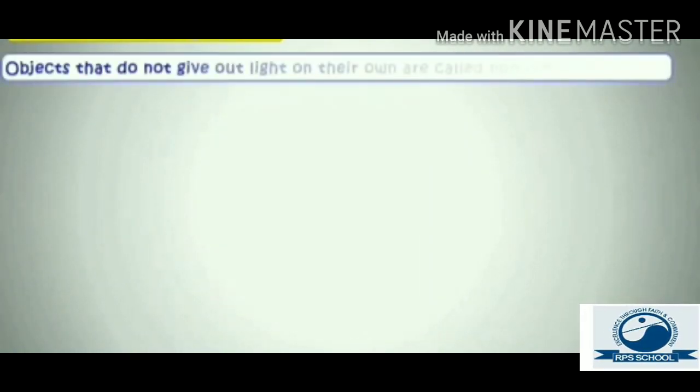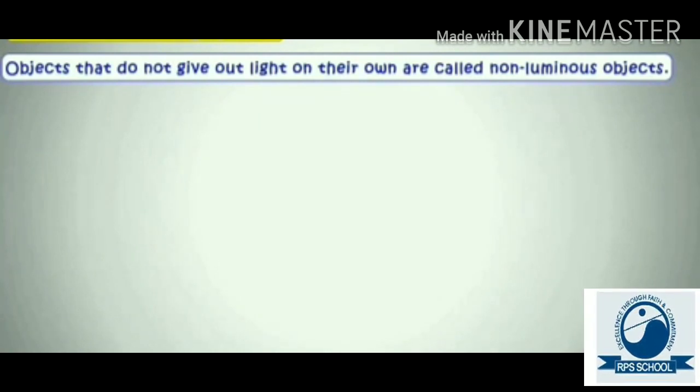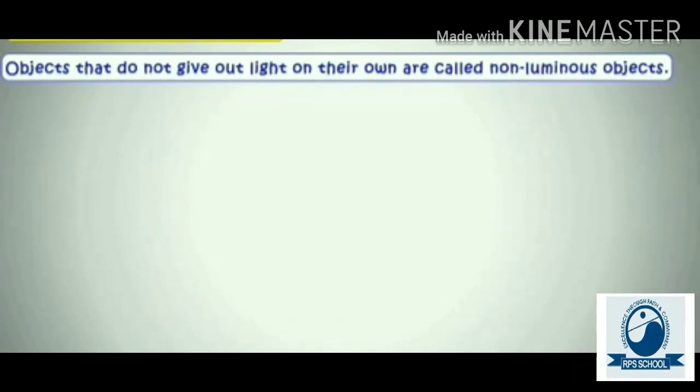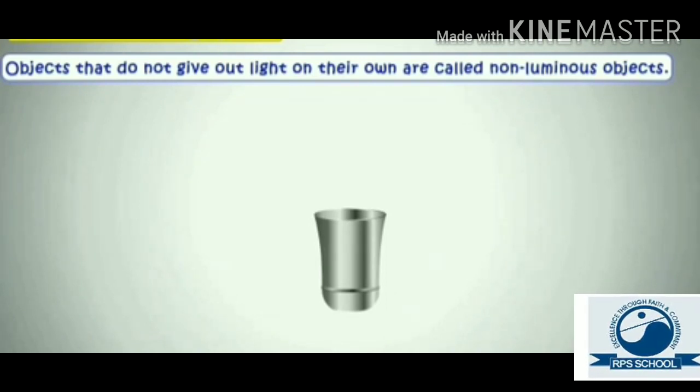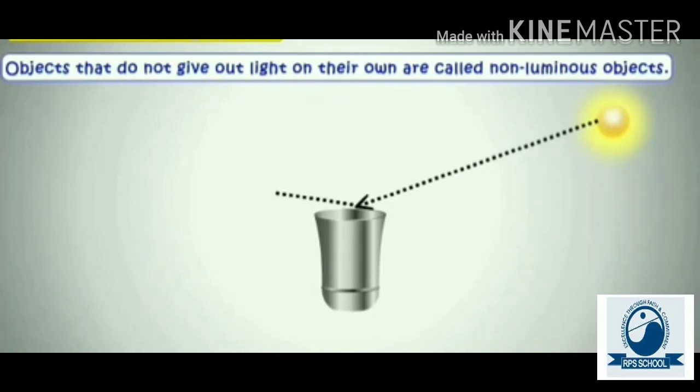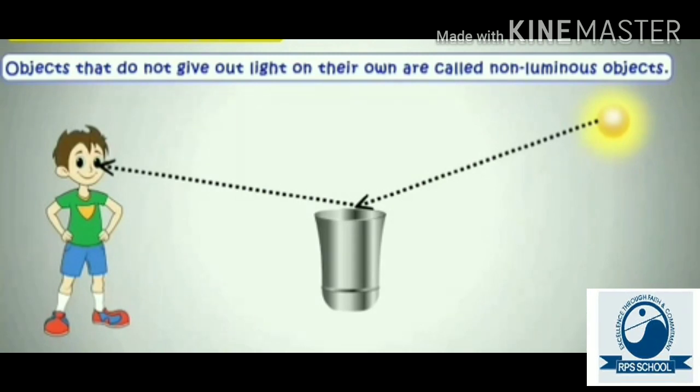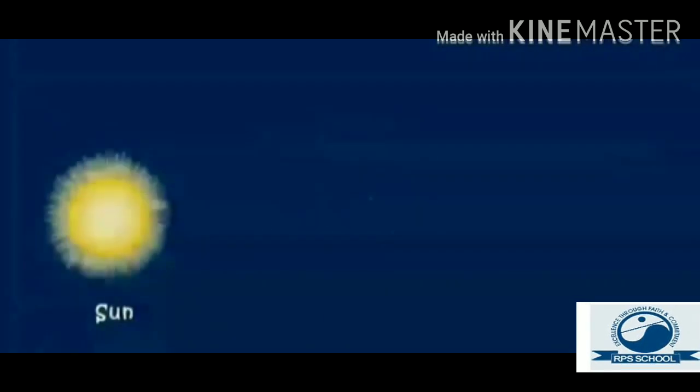Now, let us see non-luminous objects. Children, the objects that do not give out light on their own are known as non-luminous objects. Like this glass does not emit and give out light on its own. But, it is reflecting the light falling on it because of which we can see it. So, it is a non-luminous object.